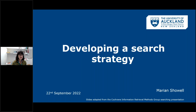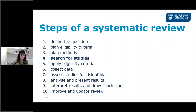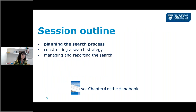Hi everybody, I'm Marianne and thanks for coming today to listen to my talk on developing a search strategy. In a systematic review we have certain steps we follow, and we generally look at developing our search for studies at step four — that is after we've defined our question clearly, our eligibility criteria, and planned our methods. So we've developed our PICO strongly: participants we're interested in, the intervention, the comparison and the study design. Today we'll talk about how you plan, construct, and manage or report research. Chapter four of the Cochrane handbook is also useful.